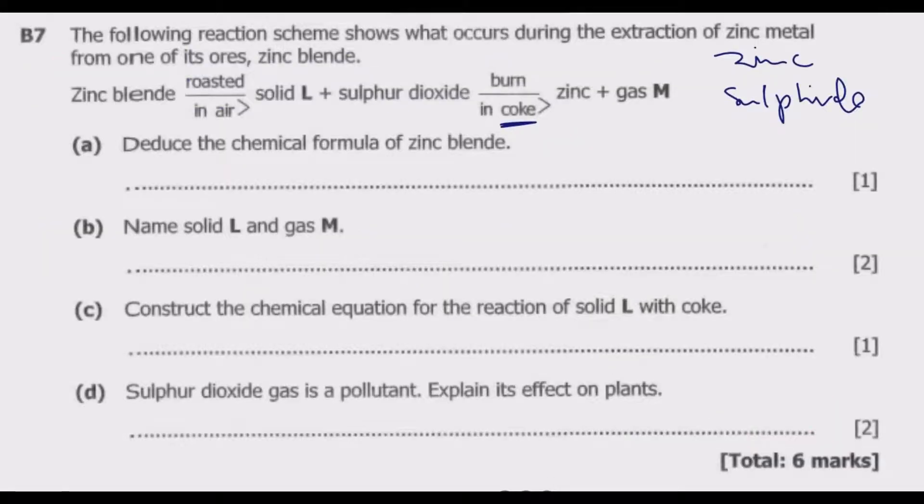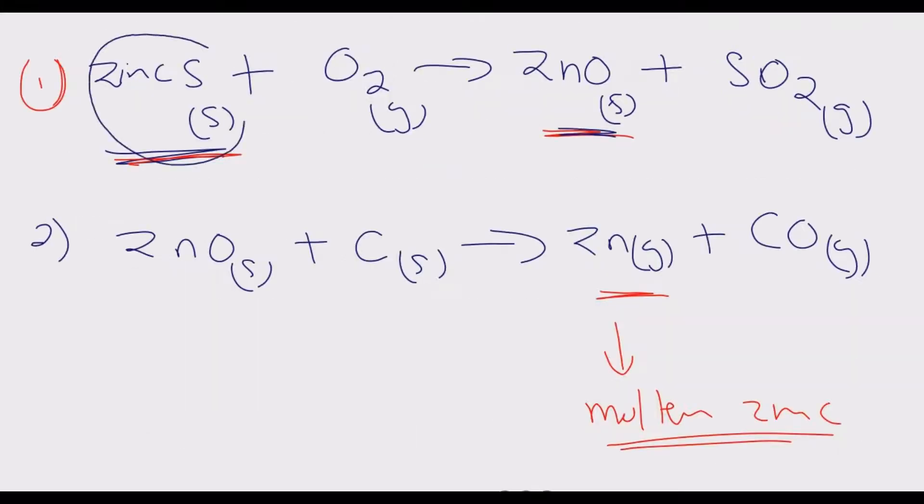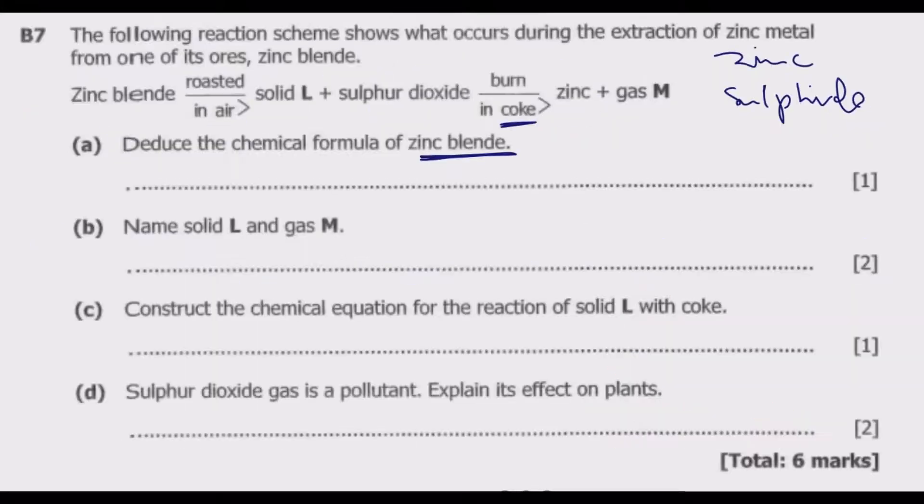Let us go to the questions. Deduce the chemical formula of zinc blende. Zinc blende, as we've talked about, is zinc sulfide. So basically it is ZnS. Remember, sulfur has a valence of 2 and zinc has also a valence of 2, hence we have this formula. The valence is the number of electrons that an element requires either to give away or gain to have a complete outer shell.